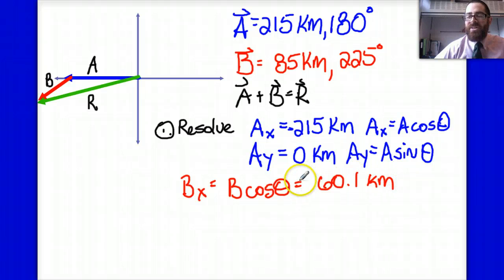But specifically, if I had plugged in 225 degrees, my calculator is going to recognize that since it's a third quadrant vector, the x component should be negative. You should be recognizing that yourself, even before you plug that into the calculator, that this x component will be pointing to the left.